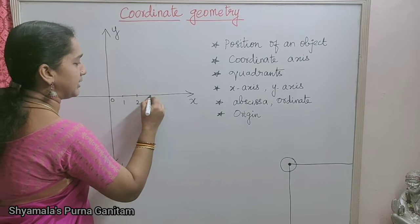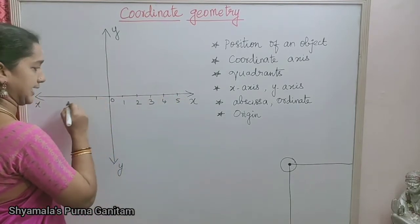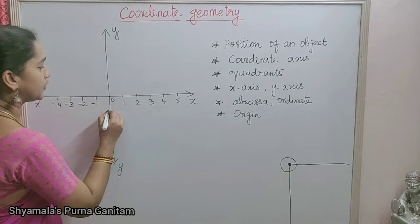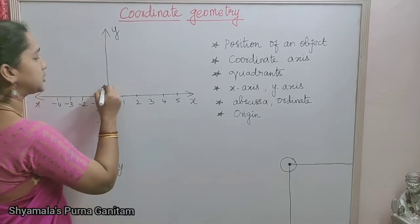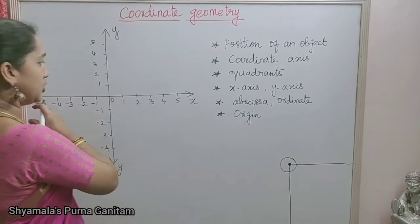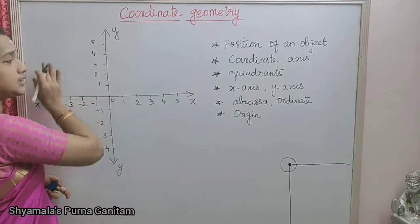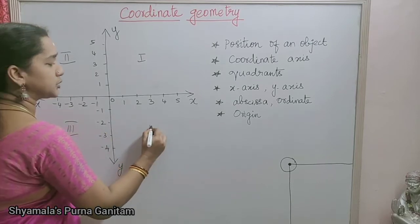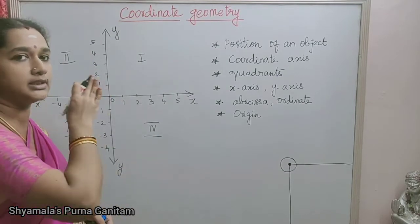We will be marking units at 1 centimeter each. The right side is the x-axis positive side and the left side is the x-axis negative side. Same way for the y-axis — the downward side is negative and the upward side is positive. When you divide this Cartesian plane horizontally and vertically, you will get 4 quadrants — 4 equal parts. This is the first quadrant, this is the second quadrant, this is the third quadrant, and this is the fourth quadrant.